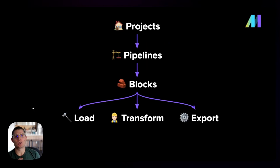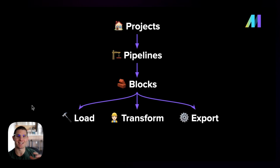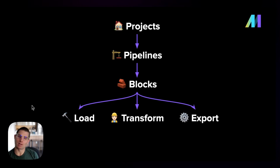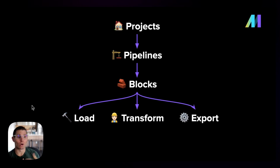When we think about Mage, these are the main concepts we need to be familiar with. There are projects, which is sort of like your home base — and you can have multiple projects in an instance as well. Within each project, there are pipelines. Pipelines are like DAGs or data workflows. And then each pipeline is comprised of blocks. Blocks are the atomic units that make up a transformation in Mage. They can be written in arbitrary Python, SQL, or R, and can do pretty much whatever you want. Commonly in data engineering, we use blocks to export, transform, or load data.